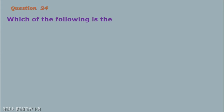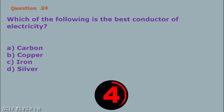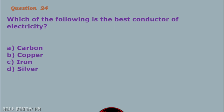Question number 24: Which of the following is the best conductor of electricity? A. Carbon B. Copper C. Iron D. Silver. The correct answer is letter D, silver.